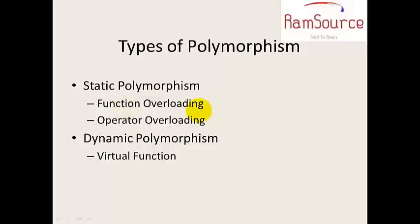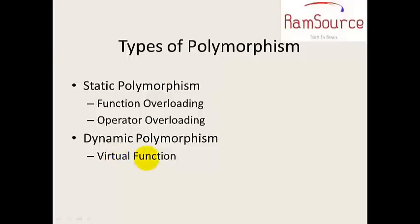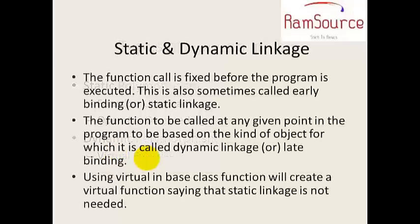Function overloading was already covered in previous sessions, so we are not going to spend a lot of time on it. Next we are going to cover operator overloading, which will have a separate session. As for now, dynamic polymorphism — we looked at method overriding and the virtual function in the last session, and we will revisit it once again.